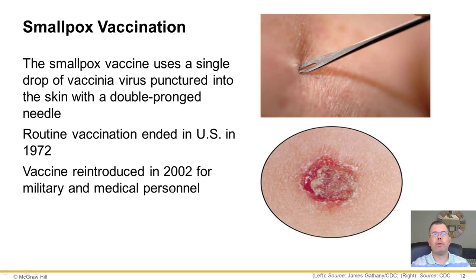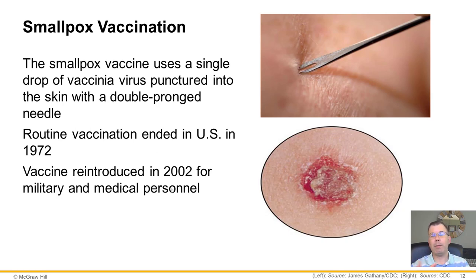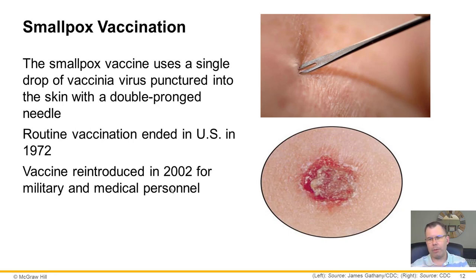The vaccine was reintroduced in 2002 after 9/11 and worries about biological weapons like anthrax. The smallpox vaccine has been given to military and medical personnel who may be frontline or deal with bioterrorism. Some of you in hospitals or the military may have been vaccinated for smallpox as protection against a potential biological weapon.